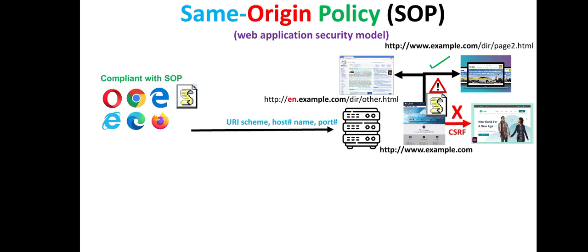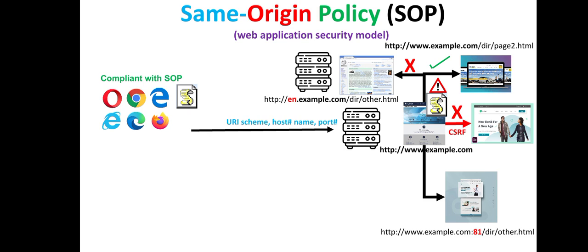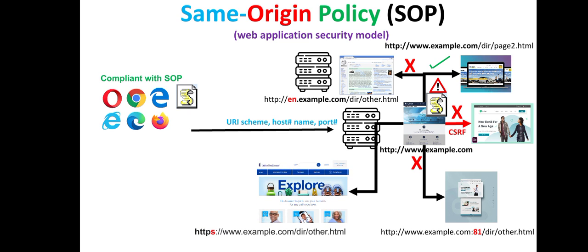Another case is where the host is different, and therefore the script would not be allowed to run on the second page. In another example, the port number is different, therefore the script would not run on the second web page. And in this case, the URI scheme is HTTPS, therefore it is different and it will also be blocked.